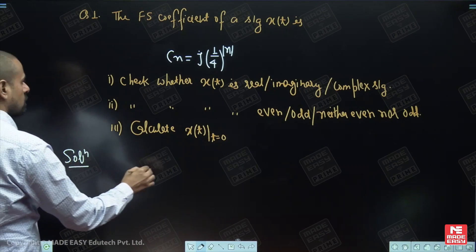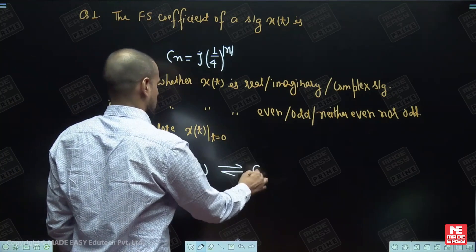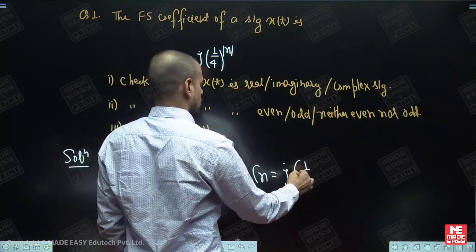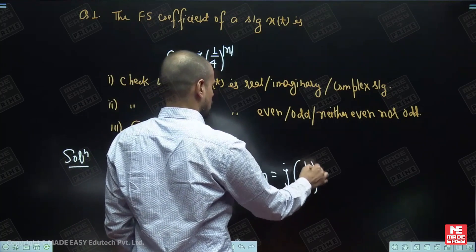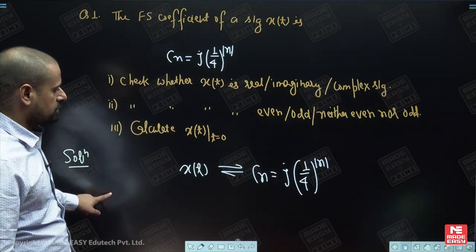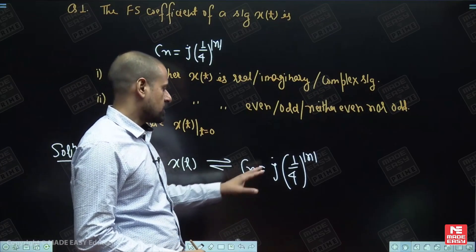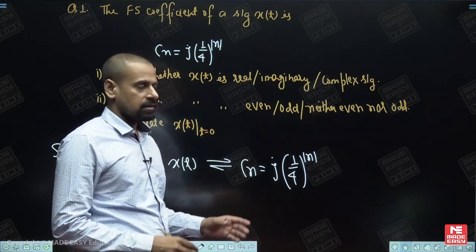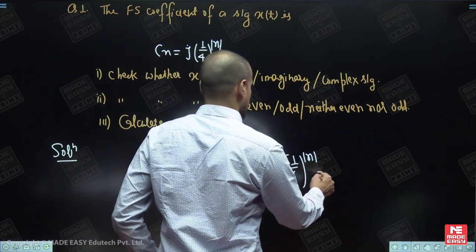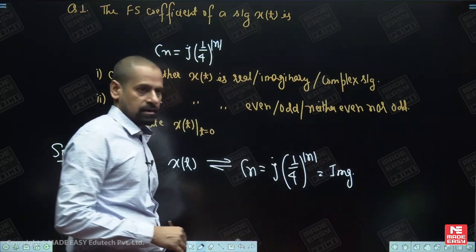The exponential coefficient C(n) is given as j into (1/4) to the power modulus of n. Since the j term is available and there is no real part in C(n), only the imaginary part is available. It means C(n) is an imaginary function.